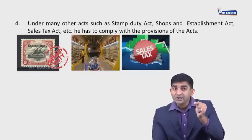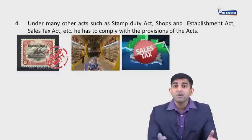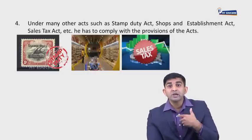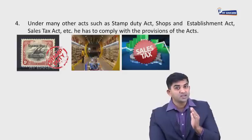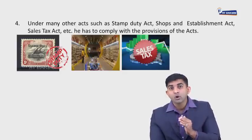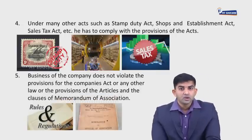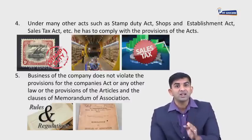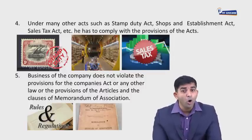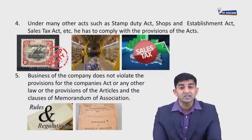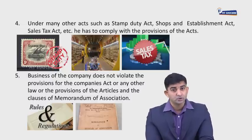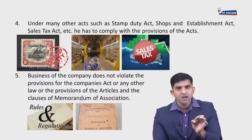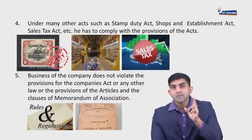A company may have various shops and branches, so they need to have a Shops and Establishment certificate, pay required stamp duty, and comply with sales tax. All these taxes and compliances have to be matched from time to time. The secretary also ensures that the business of the company does not violate the provisions of the Companies Act, any other law, or the provisions of the Articles of Association and clauses of the Memorandum of Association — two most important documents which every joint stock company must comply with.